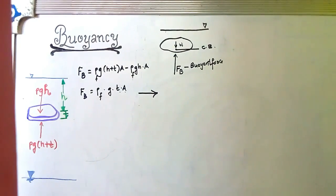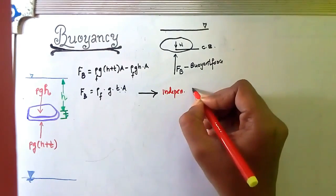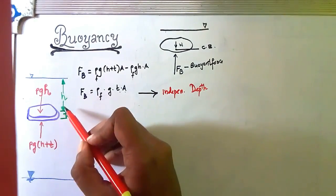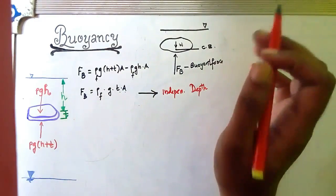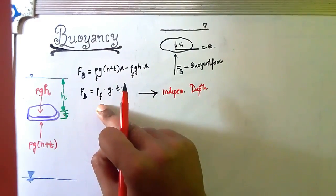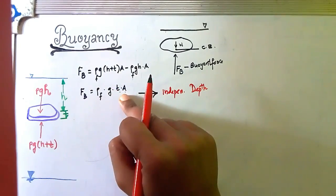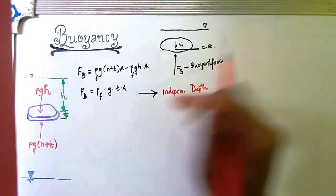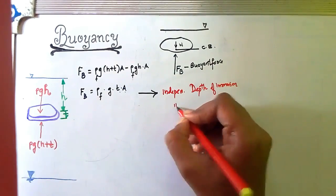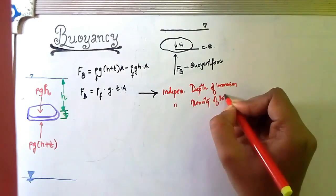One important characteristic of buoyant force is that it is independent of depth of immersion. The depth of immersion H does not appear in the final expression — only the density of fluid ρ, acceleration due to gravity g, and the volume of the submerged body. Buoyant force is also independent of the density of the solid we are immersing.